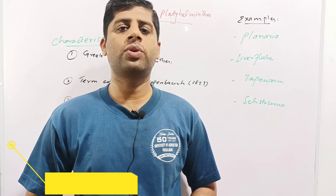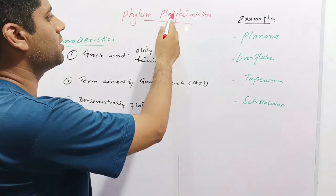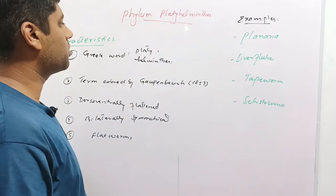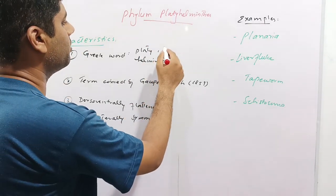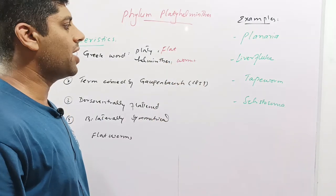Hi, I am Dr. Arsalan Khan and today we are going to discuss the phylum Platyhelminthes. The word Platyhelminthes is derived from Greek language and is composed of two words: platy means flat and helminth means worm. So these are basically the flatworms.